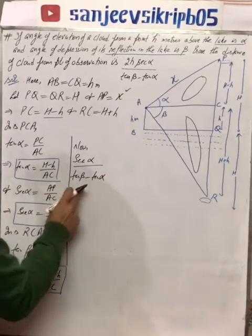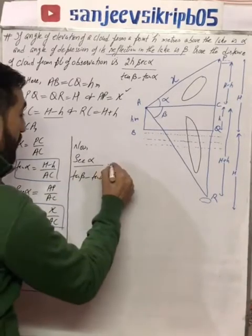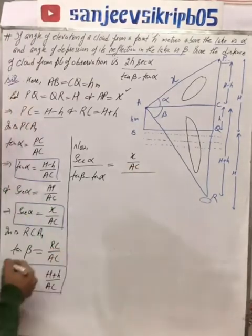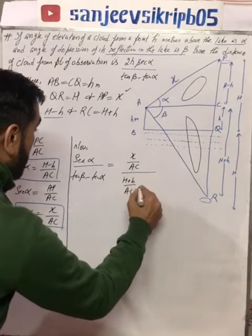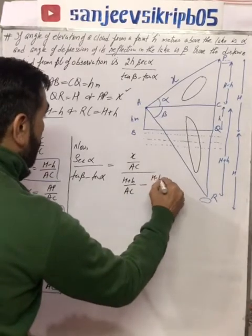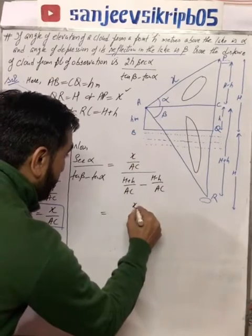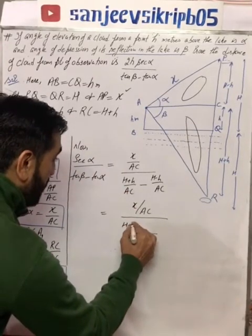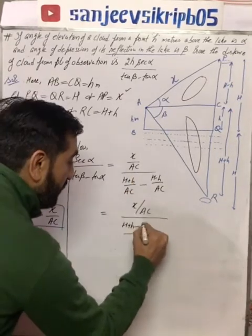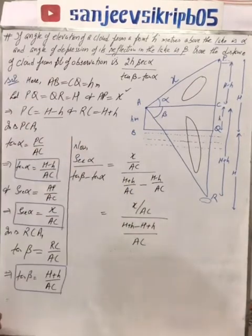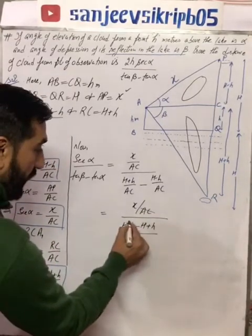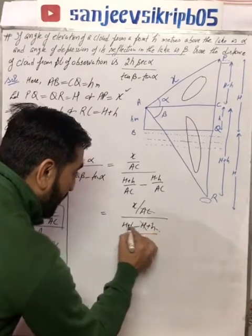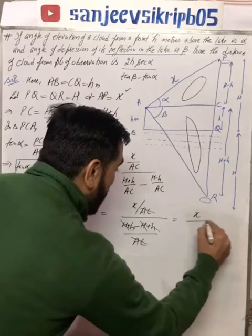Now substituting the values: sec alpha equals x over AC, tan beta equals (H plus h) over AC, and tan alpha equals (H minus h) over AC. So sec alpha over (tan beta minus tan alpha) gives us x over AC on top, and on the bottom, applying the LCD we get (H plus h minus H plus h) over AC. The AC terms cancel, and the capital H terms cancel, leaving x over 2h.